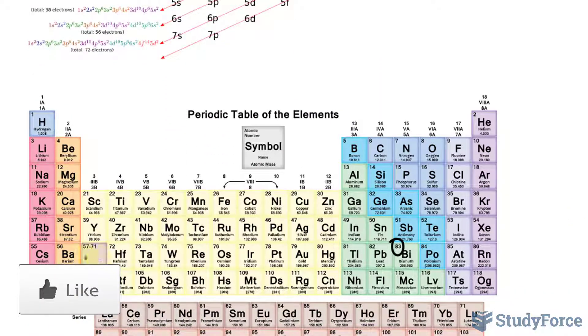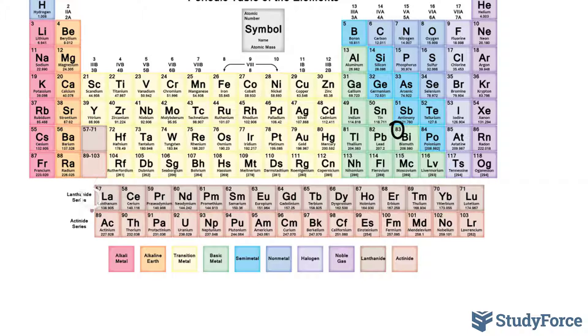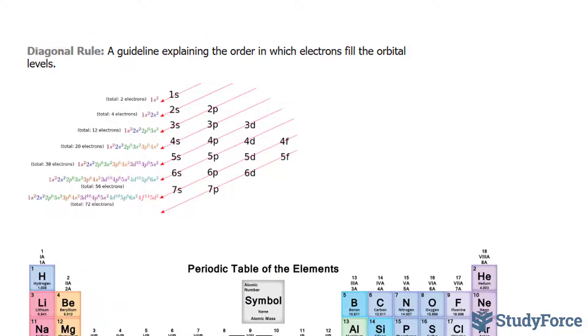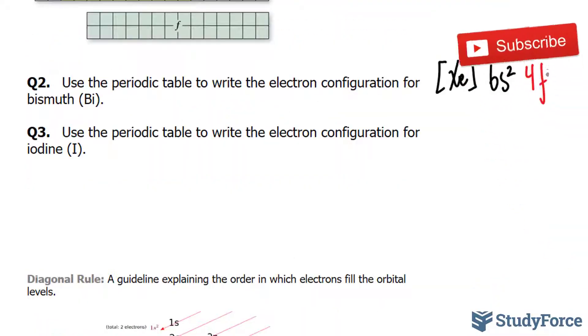Then we go past the F block. Take a look—the F block is right here. Picture this block right here. Of course, we don't have a sheet wide enough to fit this here, which is why we write them underneath. If you look at the diagonal rule, after 6S comes 4F. This orbital holds up to 14 electrons, so we'll write down 4F14.